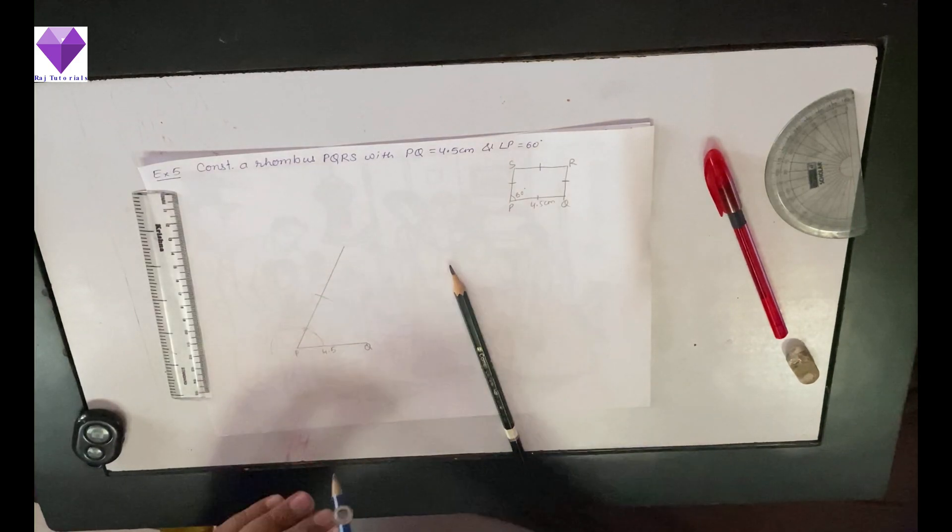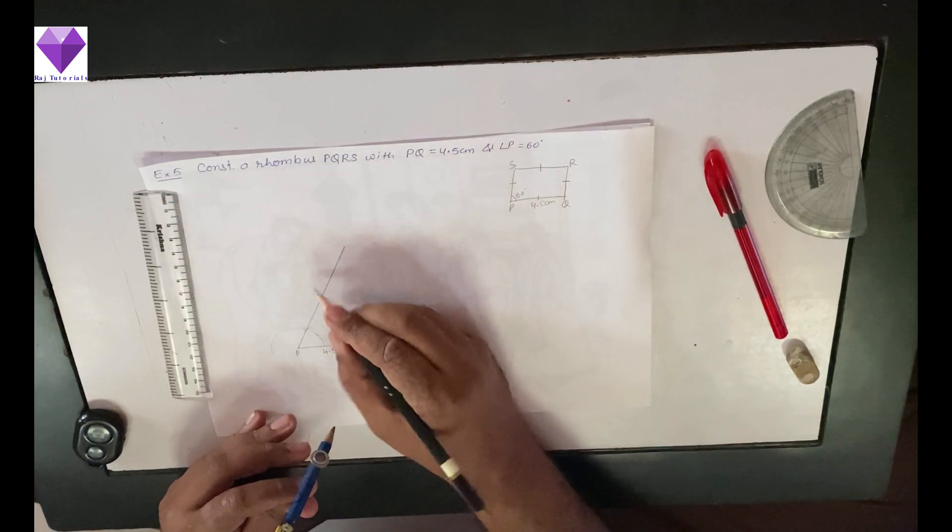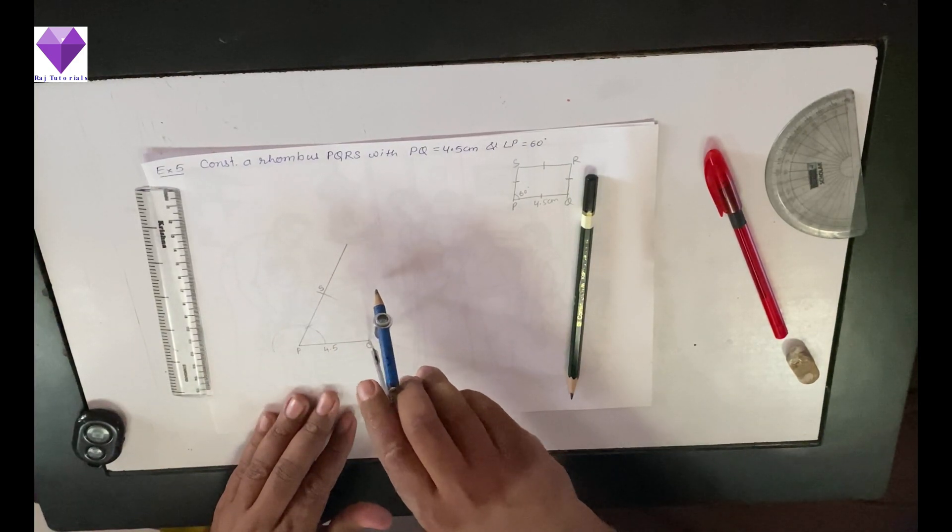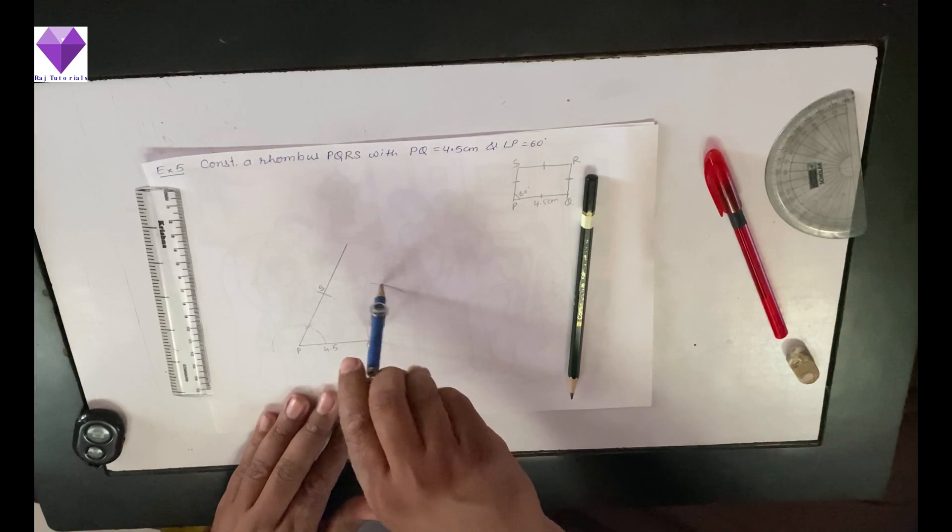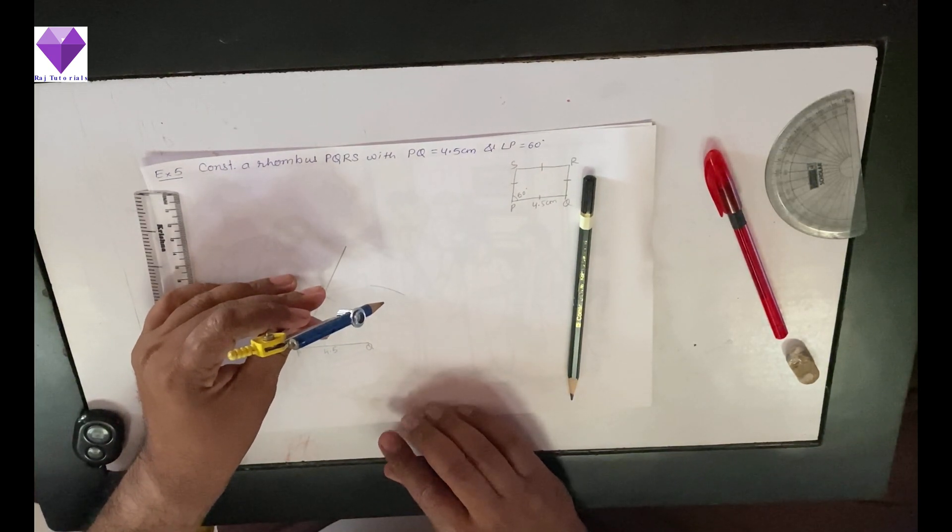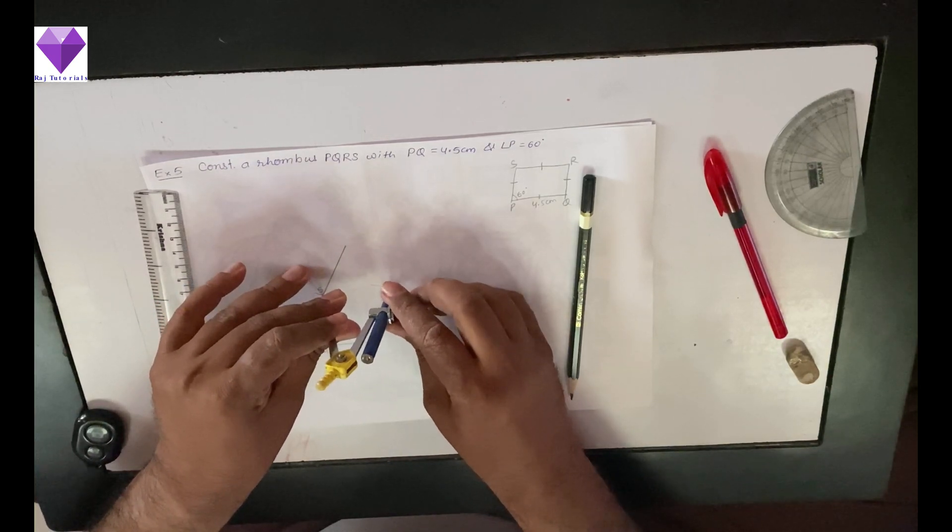Now with the same radius, with Q as center, I will mark another arc because all four sides are equal. Now with S as center and same radius of 4.5 centimeters, I will mark one arc.